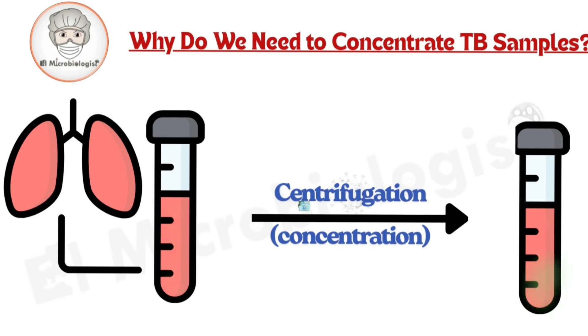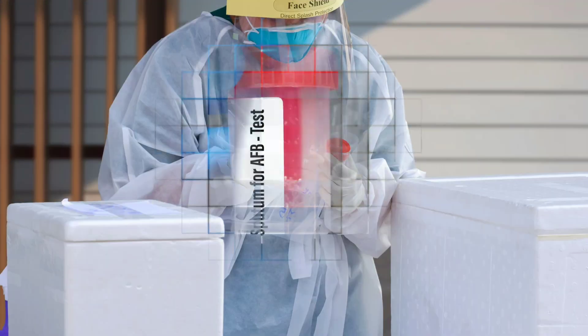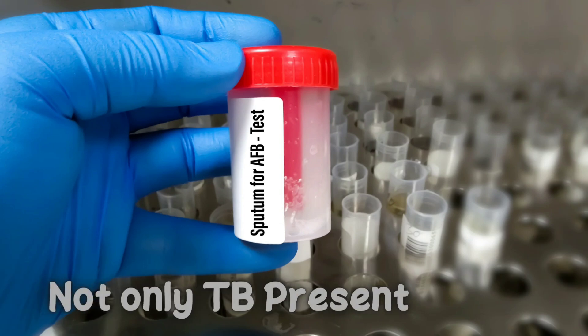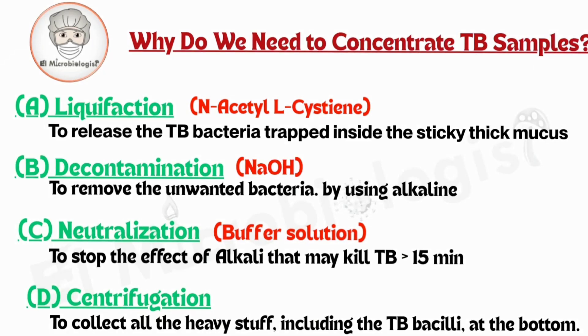How is it done? The most common sample we deal with is sputum — thick, sticky mucus from the lungs. But sputum isn't easy to work with. It's full of mucus, dead cells, and tons of bacteria, most of which aren't TB. So what do we do? We liquefy, decontaminate, and neutralize the sample, all before we even stain or culture it.